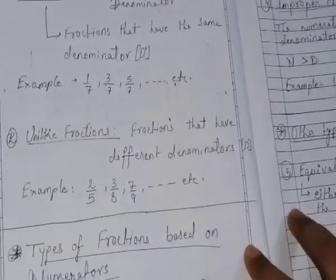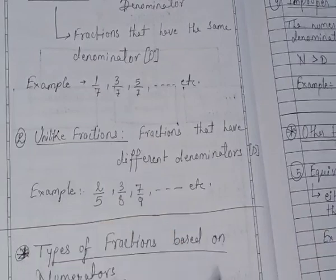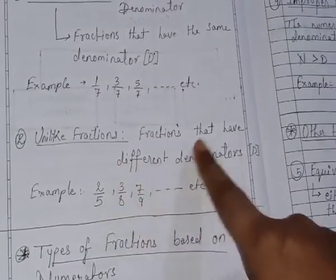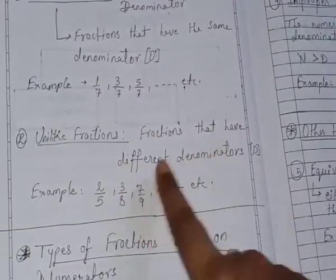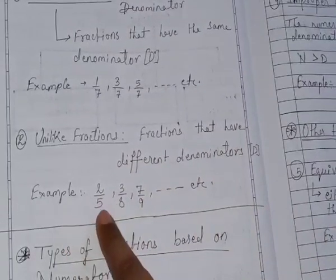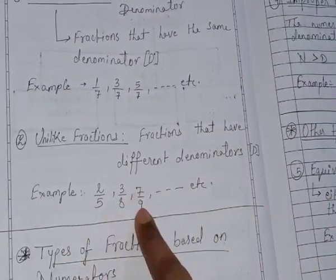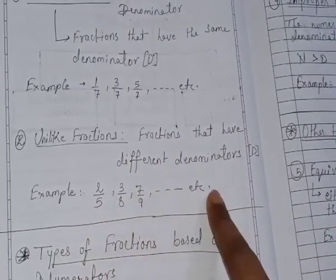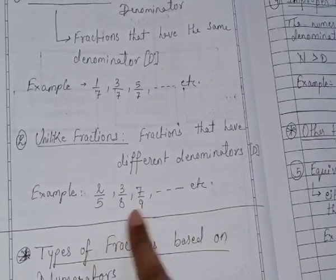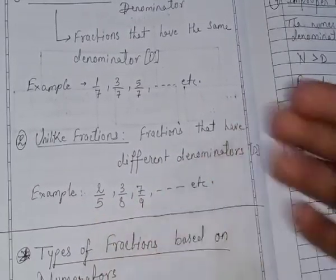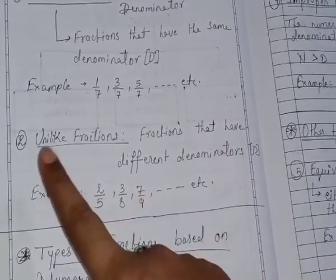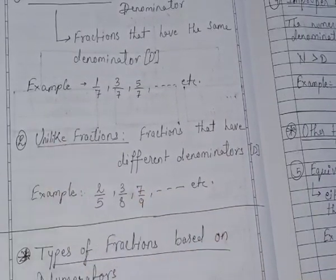Now, unlike fractions — fractions that have different denominators. For example, 2 by 5, 3 by 8, 7 by 9, etc. You can see that the denominators are different — 5, 8, 9 — all denominators are different. So, these fractions are known as unlike fractions.